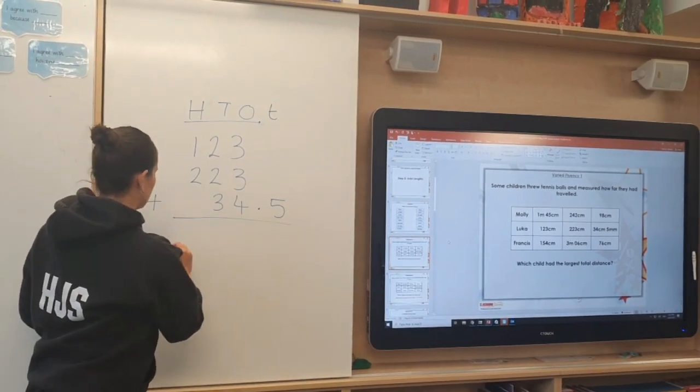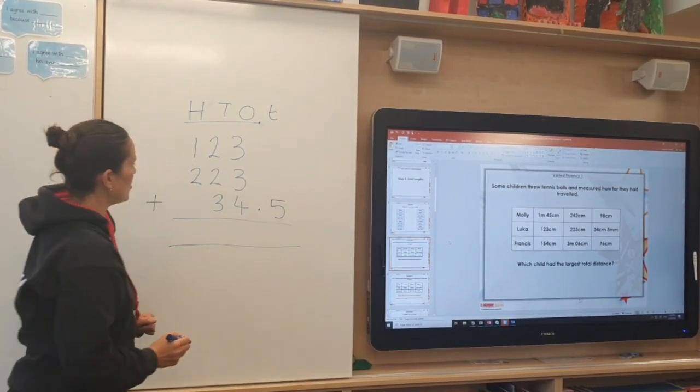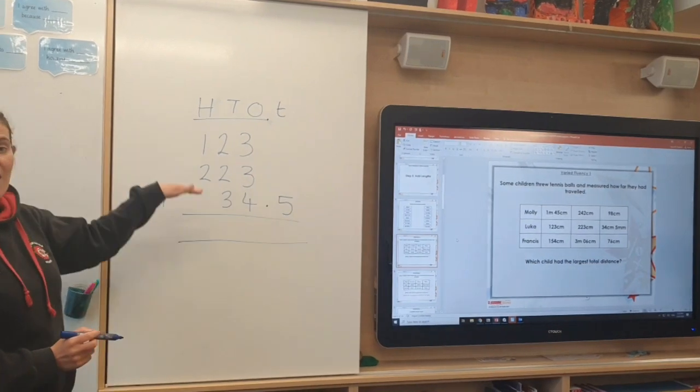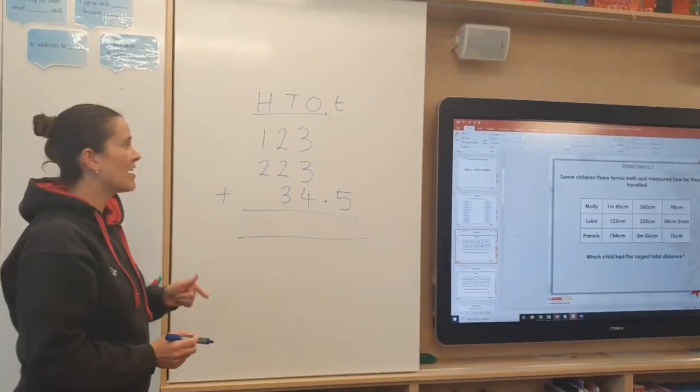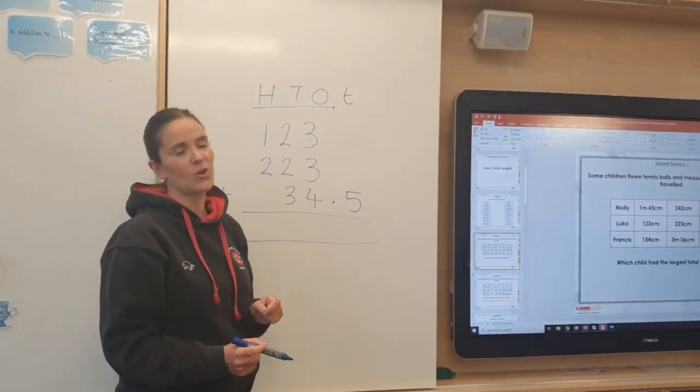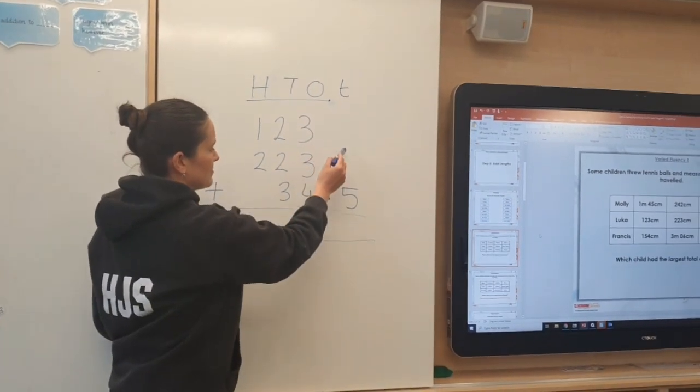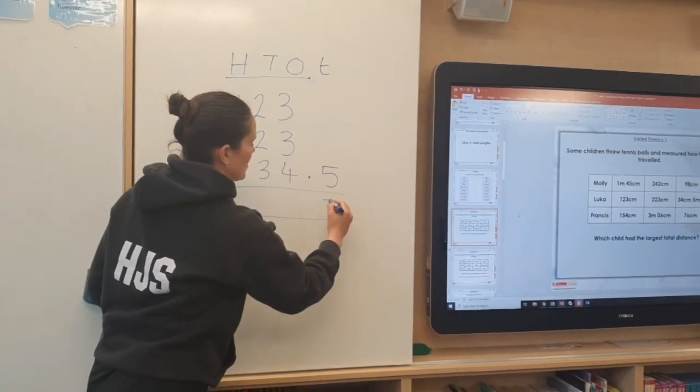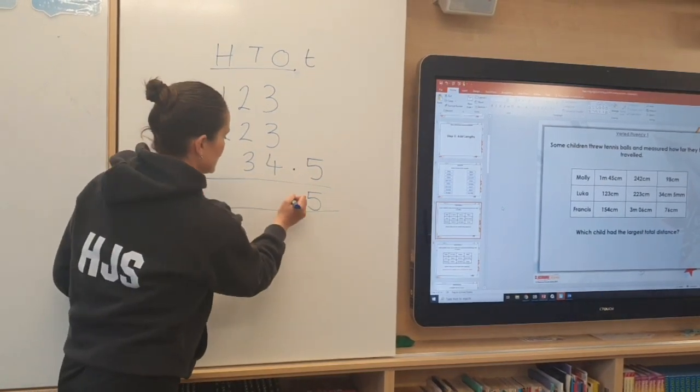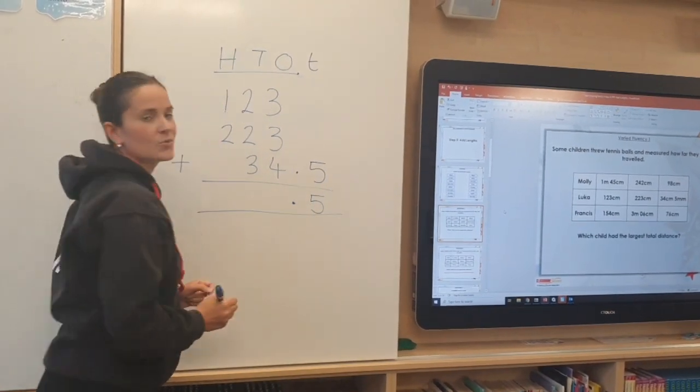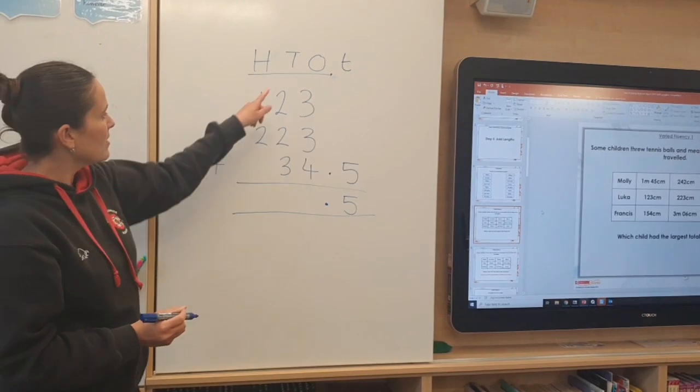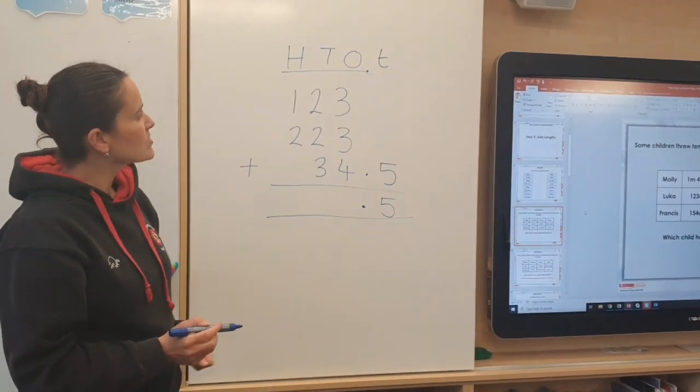Once I've got all my numbers written down I'll draw my answer box and I'm going to add up the columns one at a time starting from the tenths column. And as you can see nothing in there apart from the 5 which I'll put there. You need to remember your decimal point. It goes in the answer box as well. And then we add up the ones column.